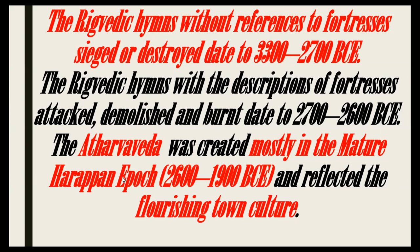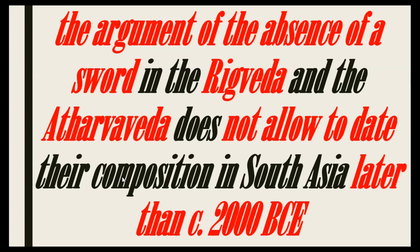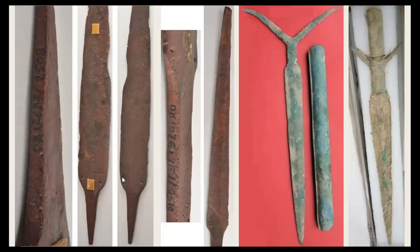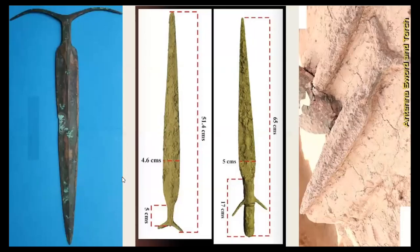The Atharva Veda was created mostly in the Mature Harappa epoch and reflected the flourishing town culture of Mature Harappa. The argument of the absence of a sword in the Rig Veda and the Atharva Veda does not allow us to date the composition in South Asia later than circa 2000 BC. Here we have the earliest so-far-known late Mature Harappan swords from Mohenjo-daro, and antenna-hilted swords from the Sanauli cemetery, late Harappan and Pot Burial culture, and the Cemetery of the Copper Hoards and Ochre Coloured Pottery culture.